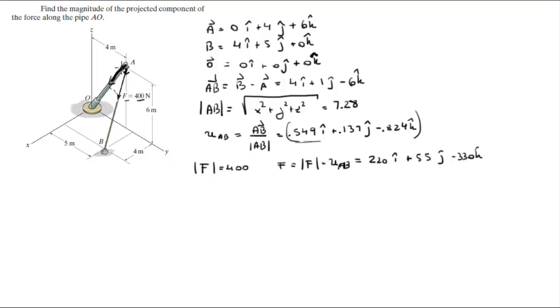Now we need to find the unit vector going along AO, which is this tiny vector right here. To do that we need to find first vector AO, which is vector O minus vector A. But since O is the origin, it's the same as the opposite of vector A, which is 0i minus 4j minus 6k.